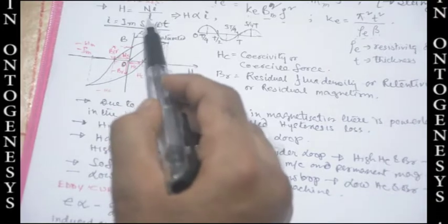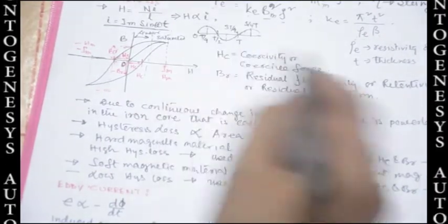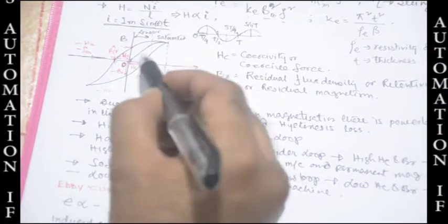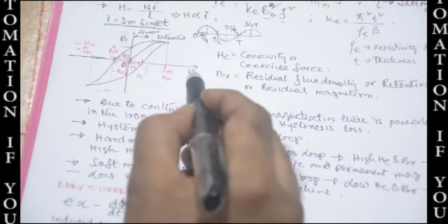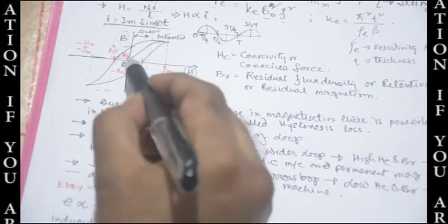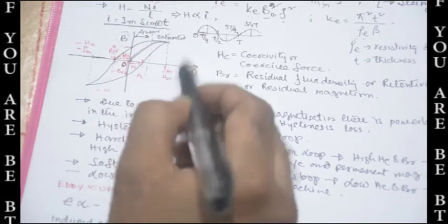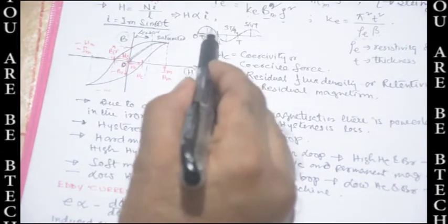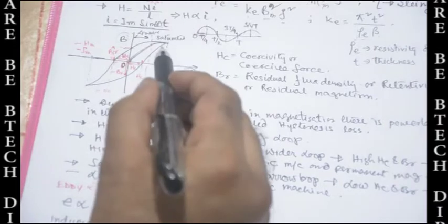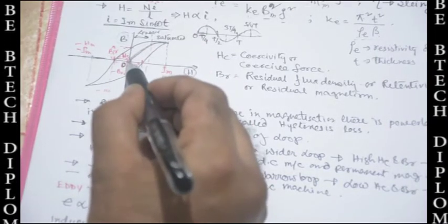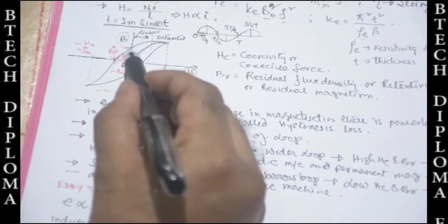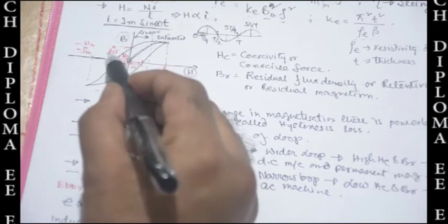Since H = NI / L and N and L are constant, H is directly proportional to I, which varies as I·sin(ωt). Starting from zero current (first quarter cycle), the B-H curve rises: first linearly, then saturates. In the second quarter cycle, as current decreases, H decreases, but B does not return to zero when H reaches zero. There is some remaining magnetism — this is called residual magnetism, B_R.